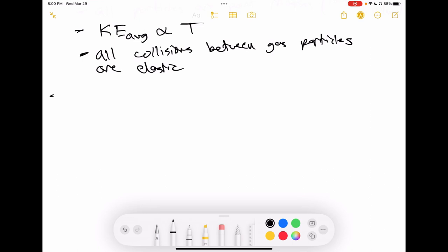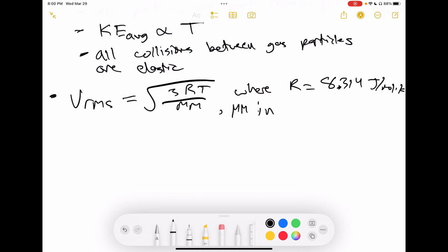Another formula or equation you should have is on the worksheet, the VRMS, or the average molecular speed of gas particle is equal to square root of three RT over molar mass, where R is the other R, 8.314 joules per mol Kelvin, and then molar mass in kilograms per mol. On the periodic table, it's given in grams per mol. So just divide that number by a thousand, and then you have the molar mass in kilograms per mol.